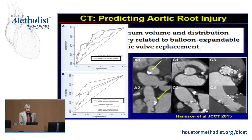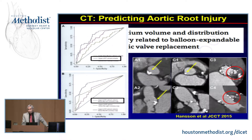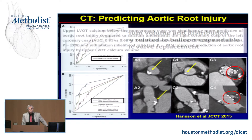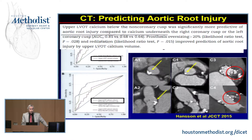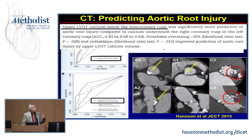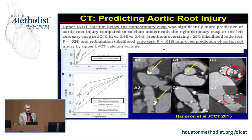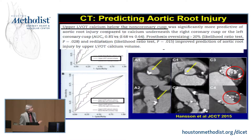If you have upper LVOT calcification, particularly involving the non-coronary cusp, you're much more likely to demonstrate abnormalities in terms of risk for rupture. Upper LVOT calcium particularly below the non-coronary cusp, and oversizing the prosthesis greater than 20%, were the greatest predictors of having complications.